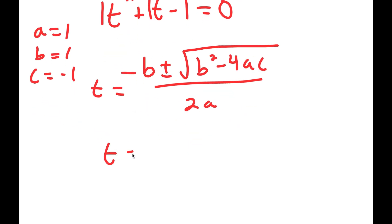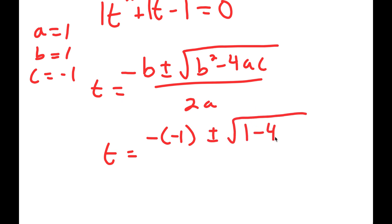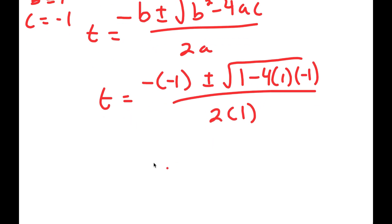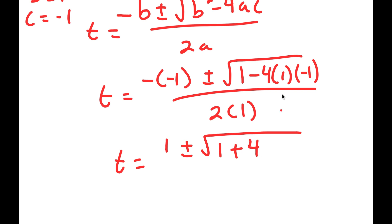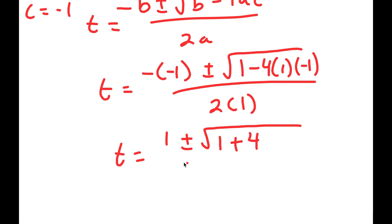So I get t is equal to negative of negative 1, plus or minus the square root of 1 squared — which is 1 — minus 4 times a, which is 1, times c, which is negative 1, all over 2 times 1. This gives 1 plus or minus the square root of 1 plus 4 — because negative 4 times negative 1 is positive 4 — all over 2.